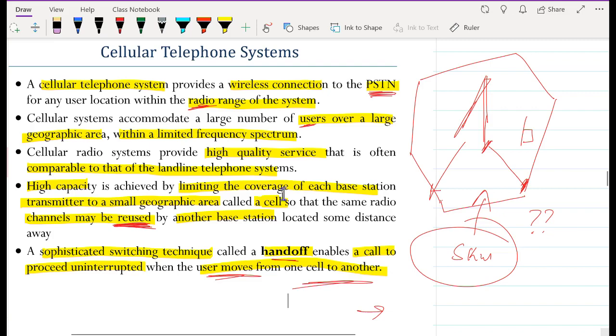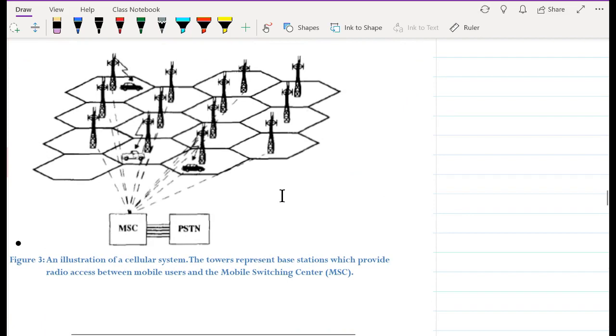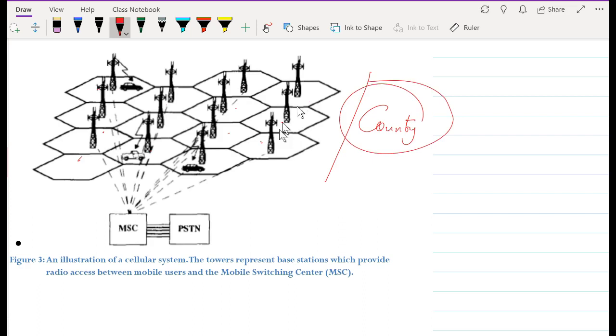This is an illustration of a cellular system. The towers represent base stations which provide radio access between mobile users and the mobile switching center or famously known as MSC. You can see that this is a region that has been divided into many cells. This might be covering an entire county, and the county may be served by say 12, 13 base stations just to illustrate.